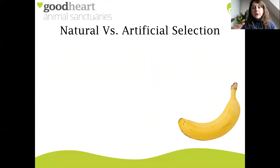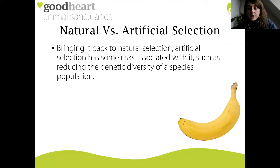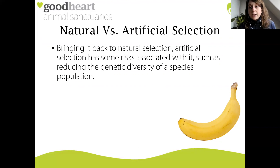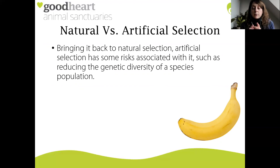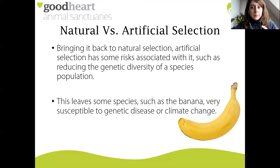So how do natural and artificial selection tie in together? Artificial selection has risks associated with it, such as reducing the genetic diversity of a species population. Thinking back to Charles Darwin and natural selection - with greater biodiversity you have greater species fitness. Artificial selection is actually the opposite: rather than promoting genetic diversity, it has narrowed diversity. This leaves some species, such as the banana, very susceptible to genetic disease or climate change.